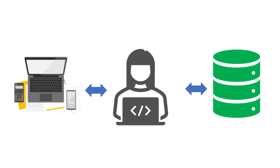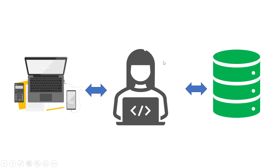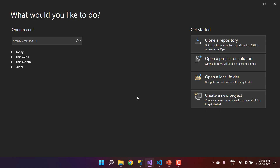To work on HTTP communications we need an API project and a database. In this video, let's create a new API application using .NET Core and create a database in SQL Server. To create the Web API I will be using .NET Core and Visual Studio 2022.